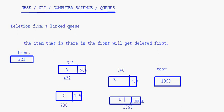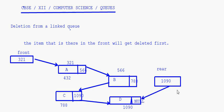This is the linked queue that I have formed. Front is pointing to 321, 321 is pointing to 566, 566 is pointing to 788, and rear is pointing to 1090. Front has address 321, rear has address 1090. The last node in the list has its next pointer as null.